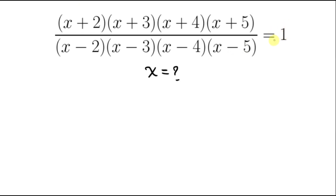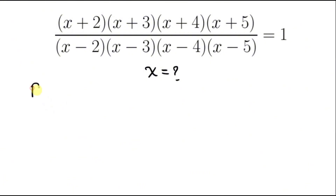Our first step will be to observe what we have. Notice that when I multiply the first term with the last term, I'm going to produce 7x. And when I multiply the second term and the third term, I'm going to produce 7x as well. So there are like terms, and what we'll do is rearrange.